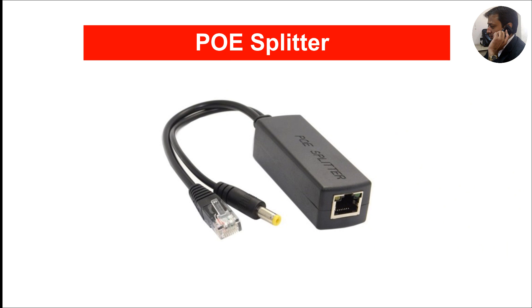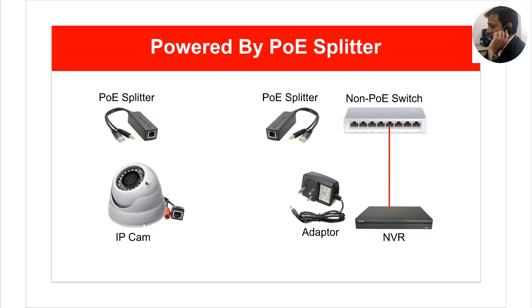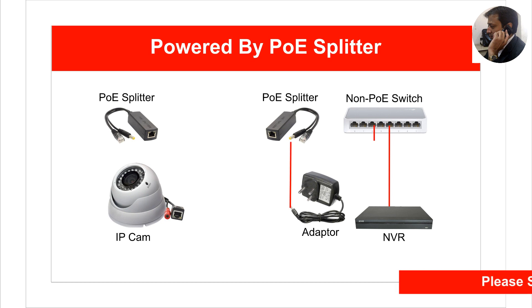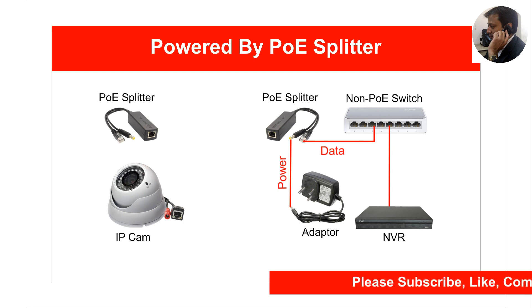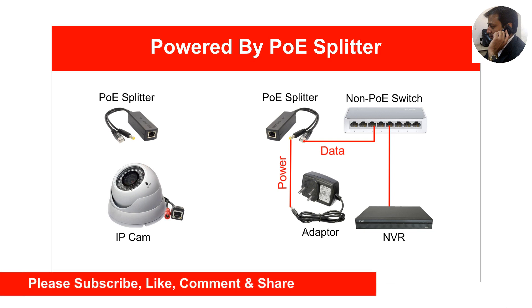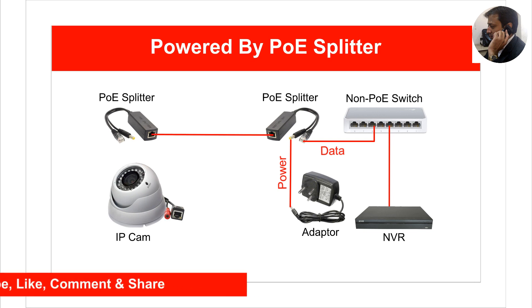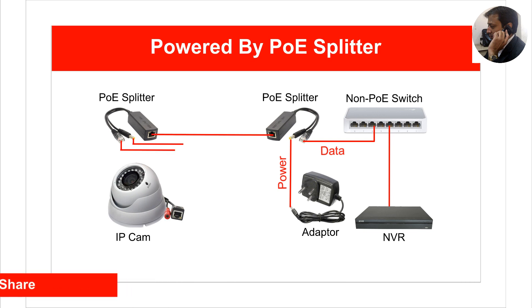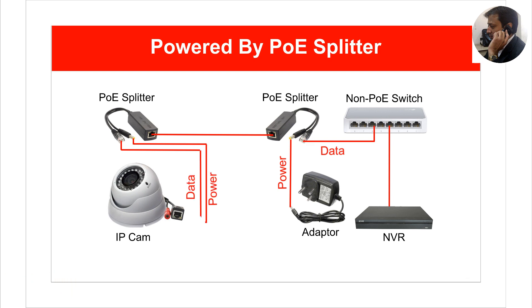In this method, we will use a pair of PoE splitters. At the switch end, a splitter is used to combine power provided by an external DC source such as a DC adapter with data, to enable it to run on a single ethernet cable. At the camera end, it is again split back into power and data, which is then connected to the power and data ports of the camera. This method allows us to eliminate the need to run an additional cable to provide power to the camera.